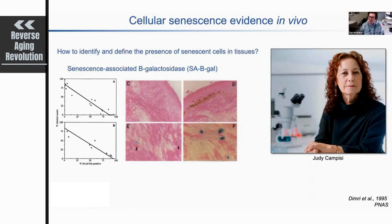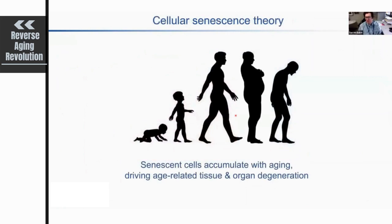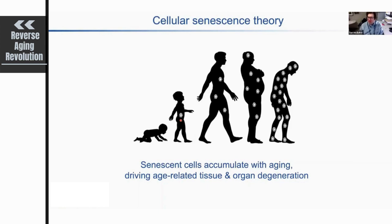We now had a tool to characterize whether senescent cells accumulate with advancing age, and it was found that they do — including at sites of age-related dysfunction. In young individuals, senescent cells may appear for a particular purpose, perhaps in response to a specific type of damage. But as we age or develop pathologies, more of these cells accumulate, and in old individuals we consistently see an increased burden of senescent cells relative to young individuals. This is pretty consistent across mammals and across different laboratories.